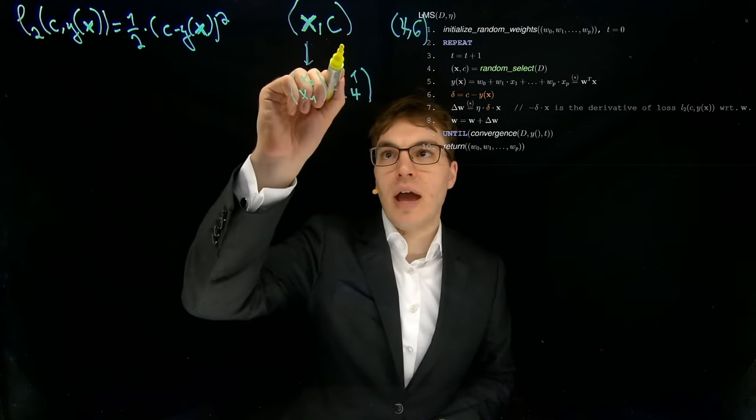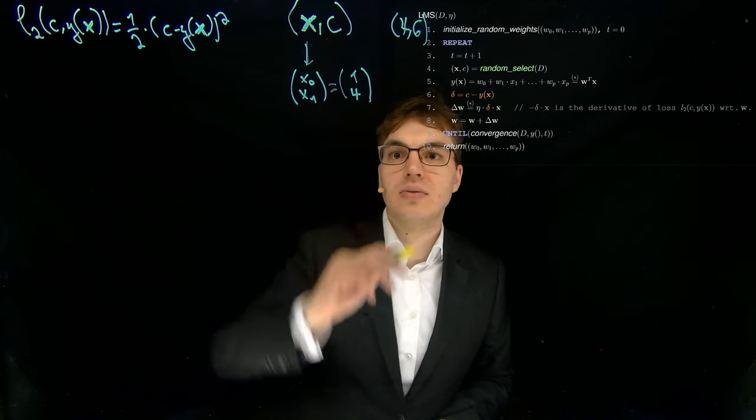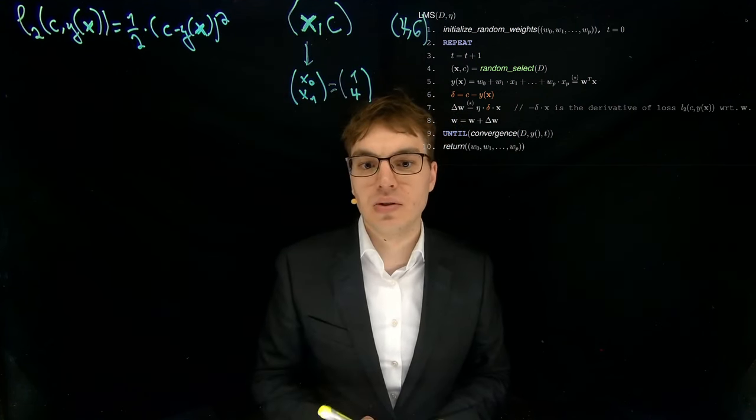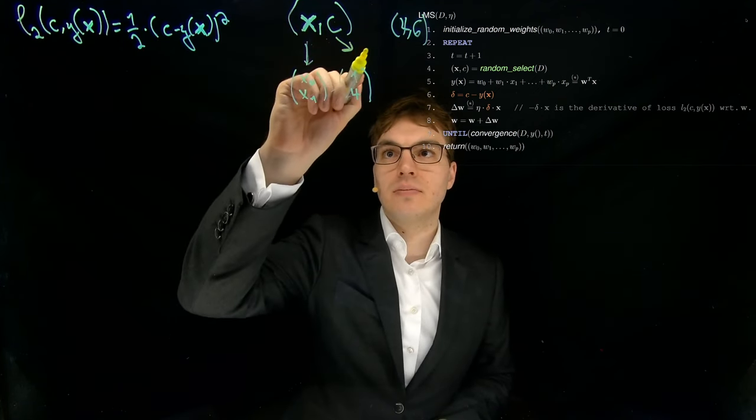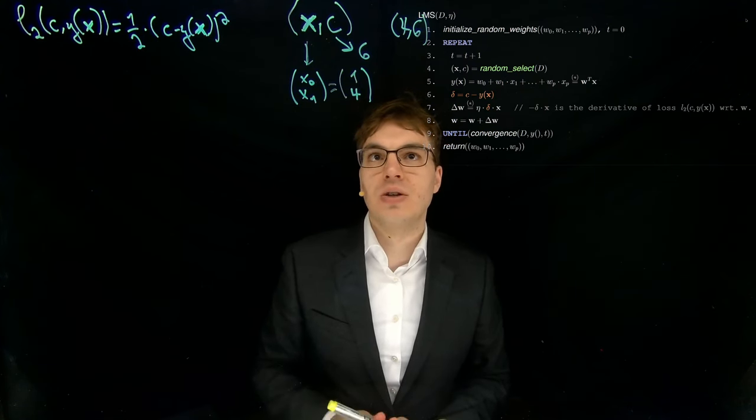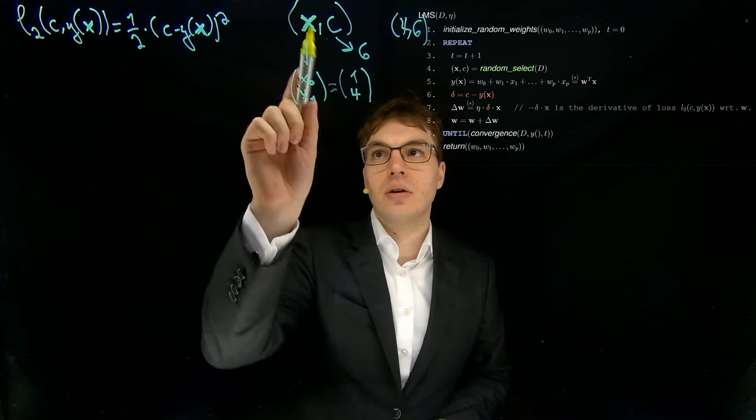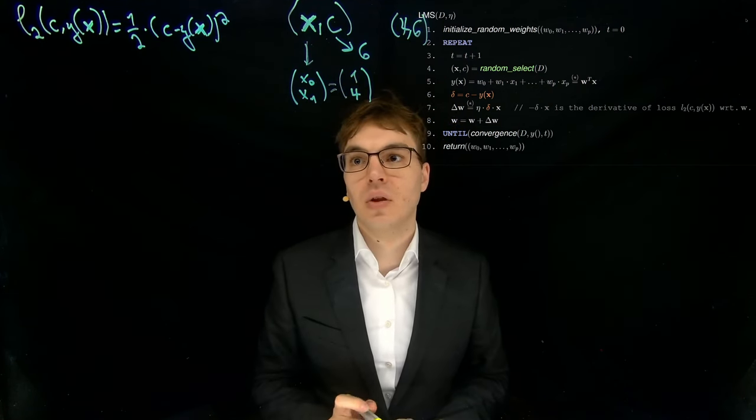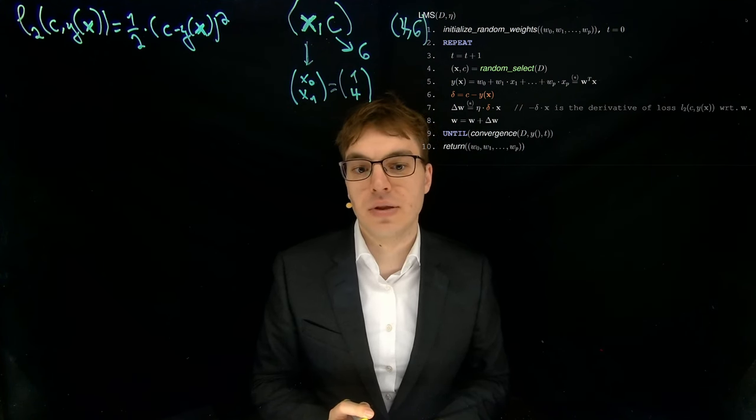And then we have our X, sorry, and then we have our C, and our C is what we want the model to produce, which is our Y value, this 6 over here. So this is really important to understand, especially the difference between this 4 over here and this vector of X values over here. This will also be relevant for an exercise that we do in the lab.